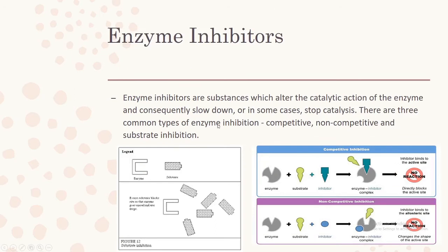Enzyme inhibitors are substances which alter the catalytic action of the enzyme and consequently slow down or in some cases stop catalysis. There are three common types of enzyme inhibition: competitive, non-competitive, and substrate inhibition.